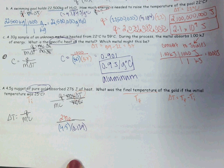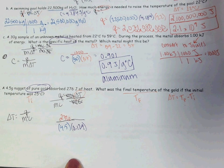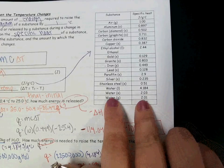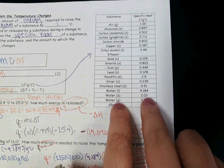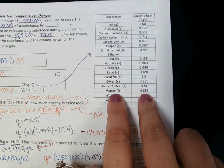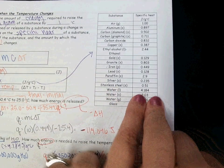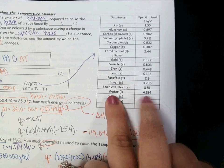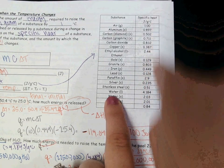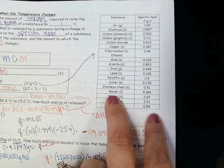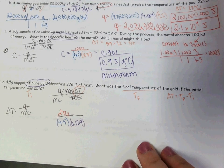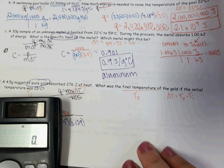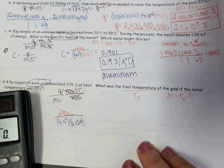Sometimes the specific heat is not different depending on the state of matter, and sometimes it is. Sometimes they're really close and you call them the same thing — for example, solid and gas for water: 2.03 versus 2.01 are really close. But then sometimes they're way off. Like water as a liquid has a way different specific heat. And I want you to note that water's specific heat as a liquid is way higher than almost everyone else's — actually way higher than everyone else's. So when I plug this into my calculator, I get 276 divided by 4.5 divided by 0.129.